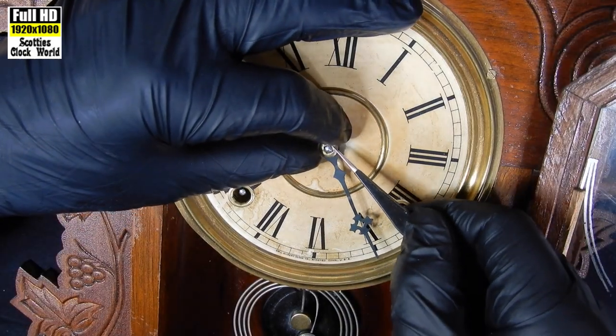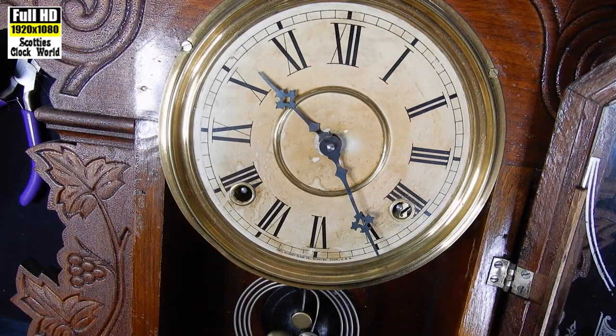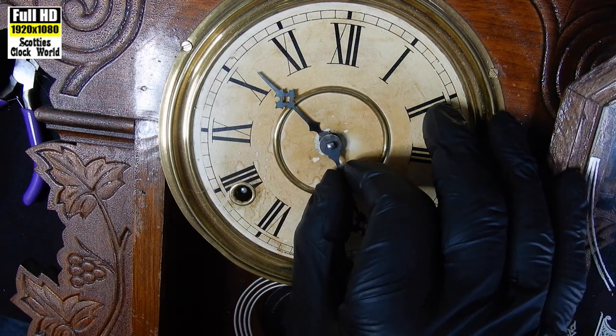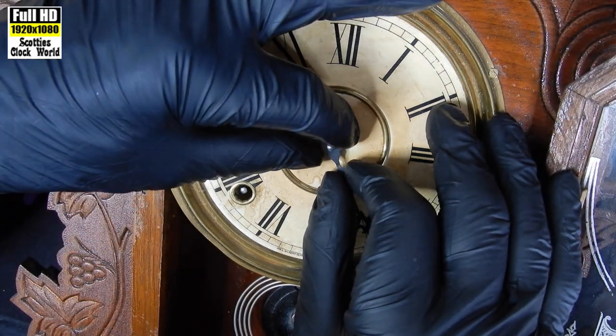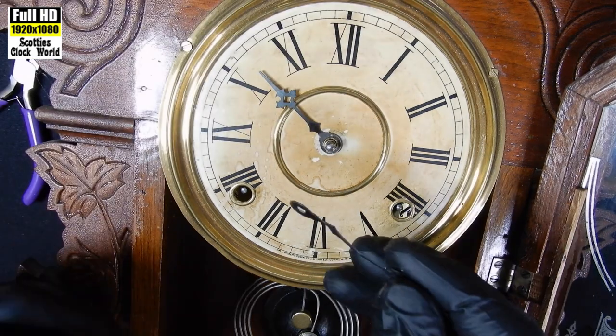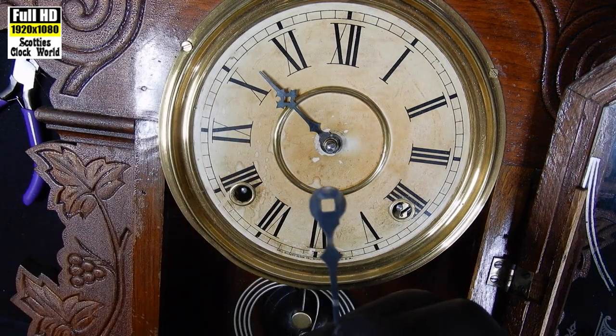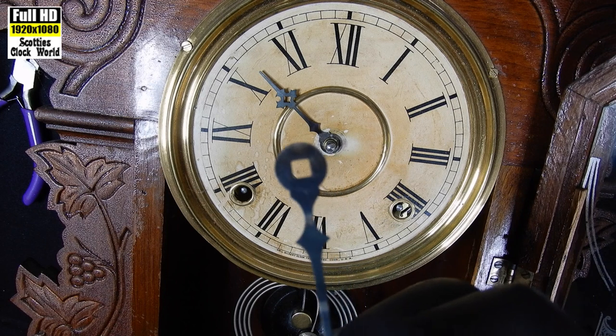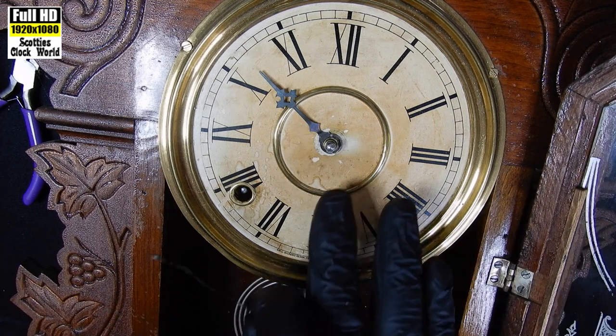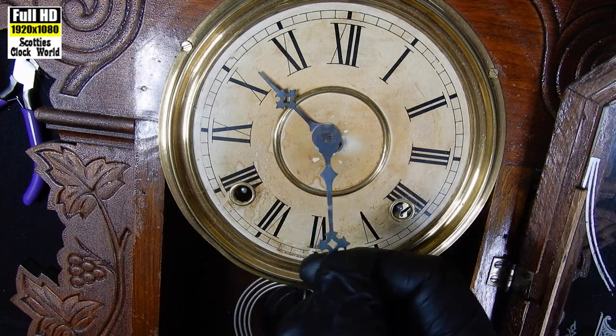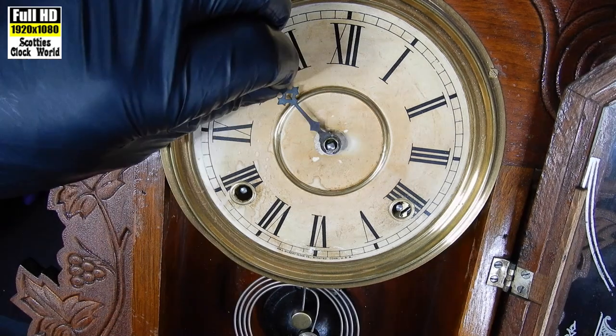Then there's a brass washer below that. Take that off also and the minute hand should come off easily. You'll notice there's a square hole in it that fits over the minute arbor. We'll look into that further as we go on.